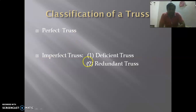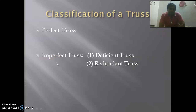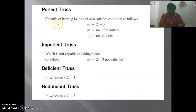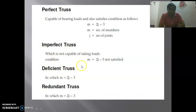An imperfect truss does not follow the equation m = 2j − 3. Imperfect truss may be sub-classified into deficient truss and redundant truss. A perfect truss is capable of bearing load and satisfies m = 2j − 3. In a deficient truss, m is less than 2j − 3, and in a redundant truss, m is greater than 2j − 3.